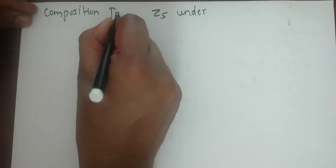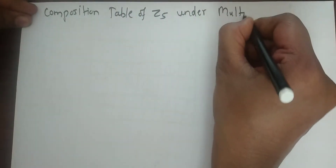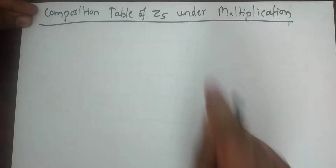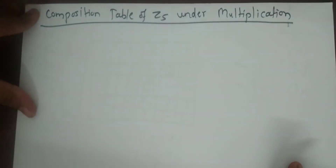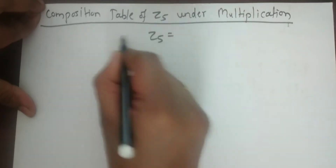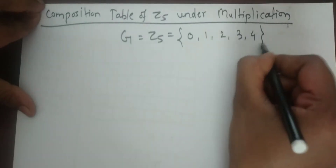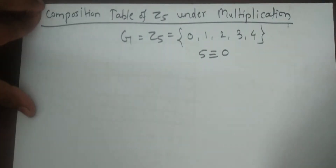Good morning everyone. Now let's see the composition table of Z5 under multiplication. In the previous video we have seen the composition table of Z5 under addition. Now let's see the composition table of Z5 under multiplication. We know Z5 is a group having elements 0, 1, 2, 3, and 4, and here 5 is equivalent to 0.